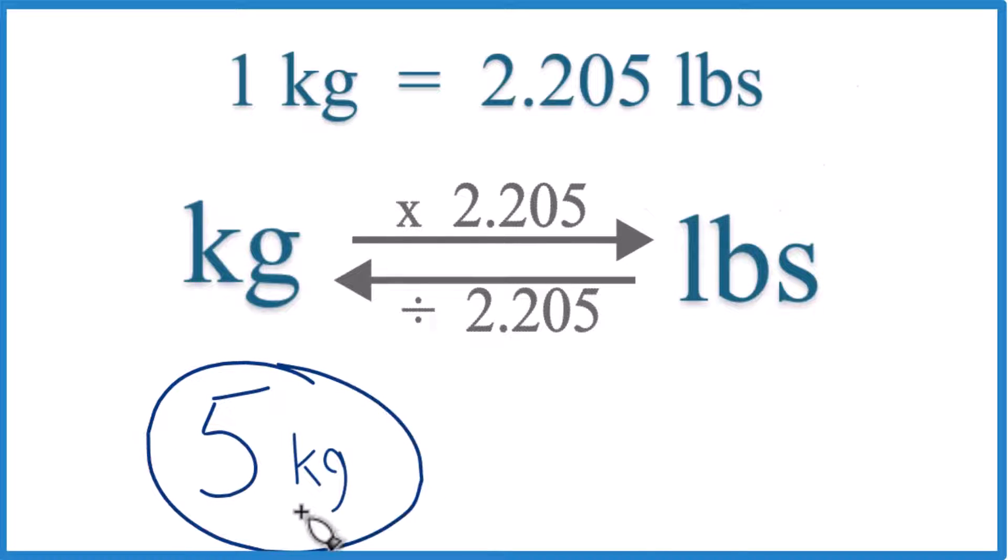Let's convert 5 kilograms to pounds. And here's how you do it. 1 kilogram, that equals 2.205 pounds.